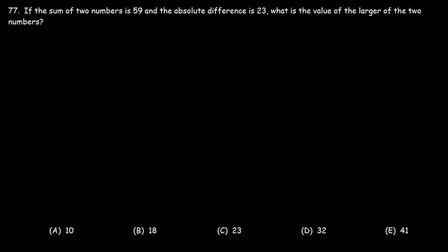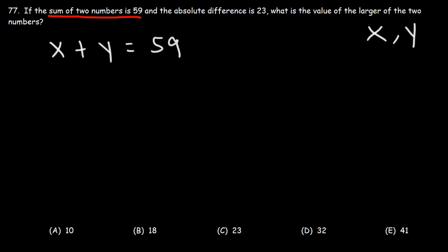Problem 77: If the sum of two numbers is 59 and the absolute difference is 23, what is the value of the larger of the two numbers? Let x be the larger number and y be the smaller. We know x + y = 59. The absolute difference means x − y = 23. We now have a system of equations.